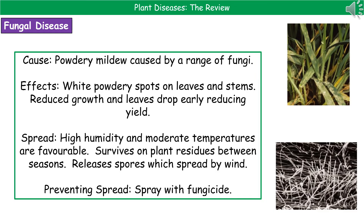Because this is a fungus, it likes high humidity and moderate temperatures. It's not just going to die off in a short space of time, because it can actually survive on plant residues between seasons. It will also release spores which can be spread by wind to other plants. In order to prevent this spread, we need to spray it with a fungicide — chemicals which kill fungi.